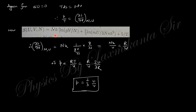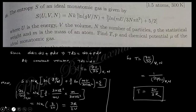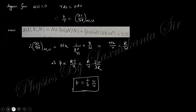To find pressure P: at constant U, P/T = (∂S/∂V)_{U,N}. Differentiating S with respect to V gives R/V, so P = RT/V. Substituting T = 2U/3R gives P = 2U/3V. This confirms the ideal gas pressure relation for the monatomic gas.